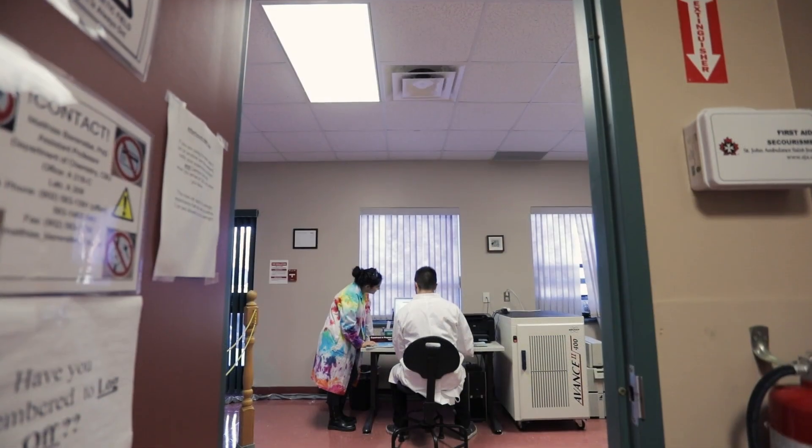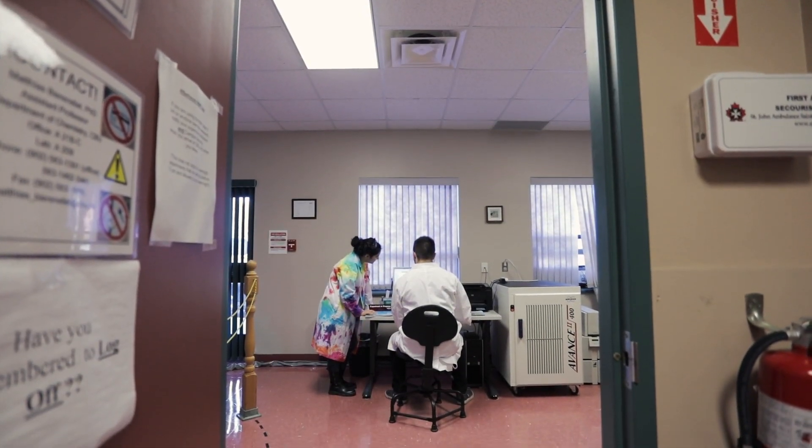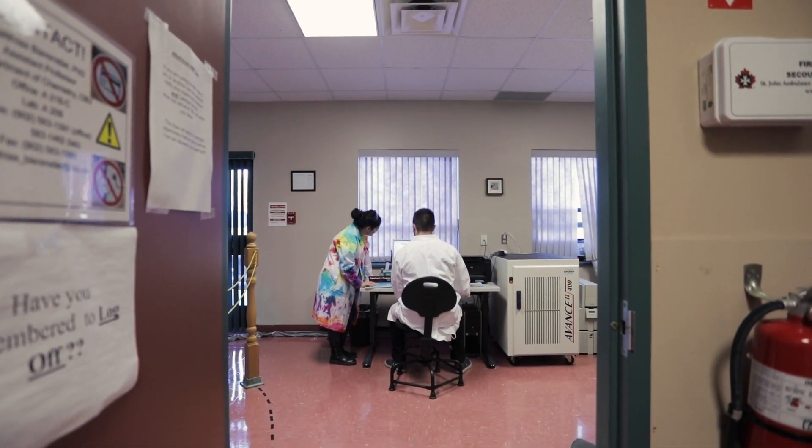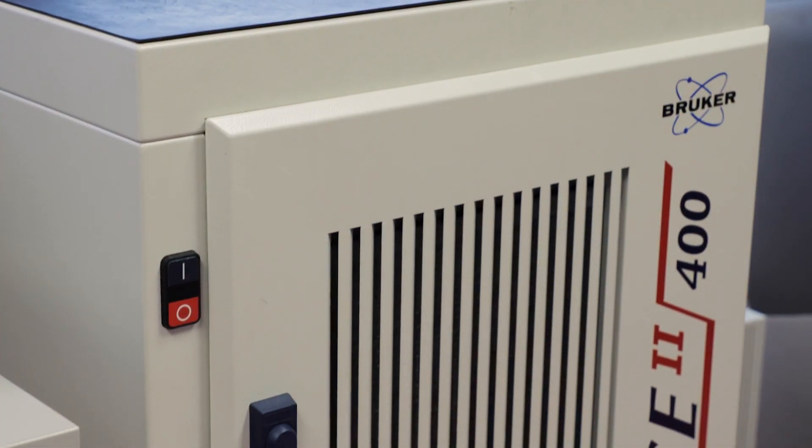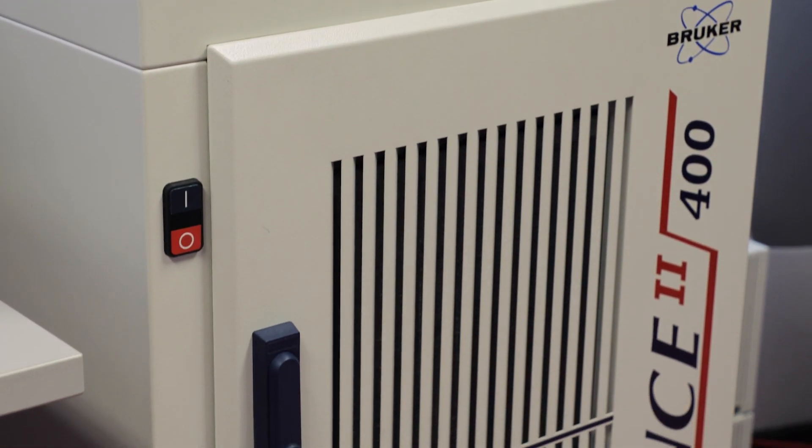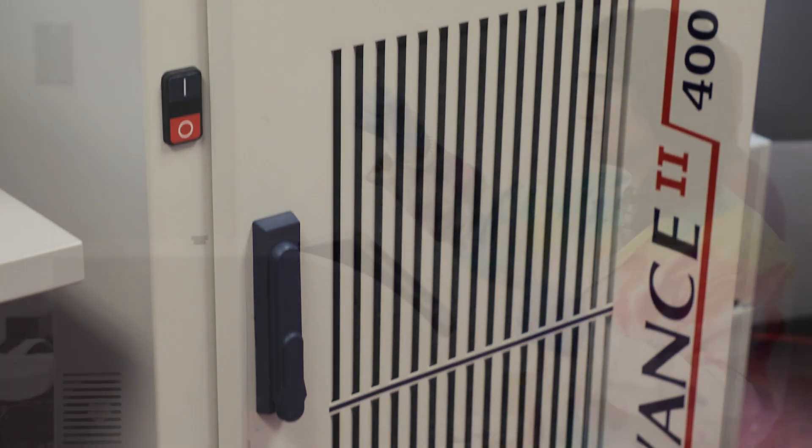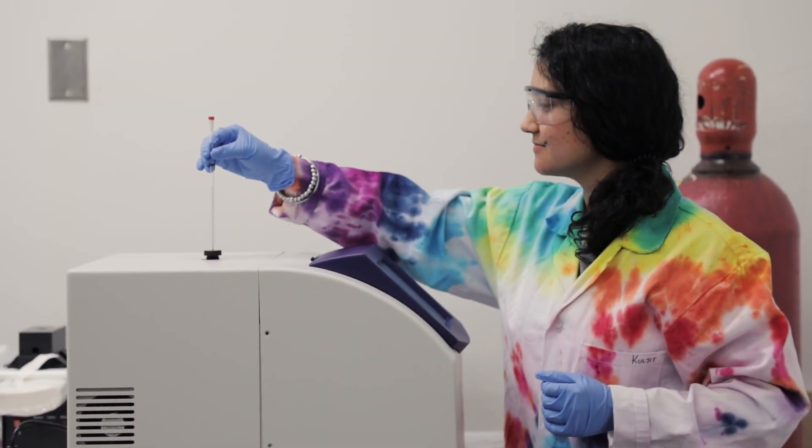In the chemistry department we have a wide variety of instrumentation available to our students. Two of the instruments that we use specifically supplied by Bruker are the 400 MHz NMR Spectrometer and the Electron Paramagnetic Resonance Spectrometer.